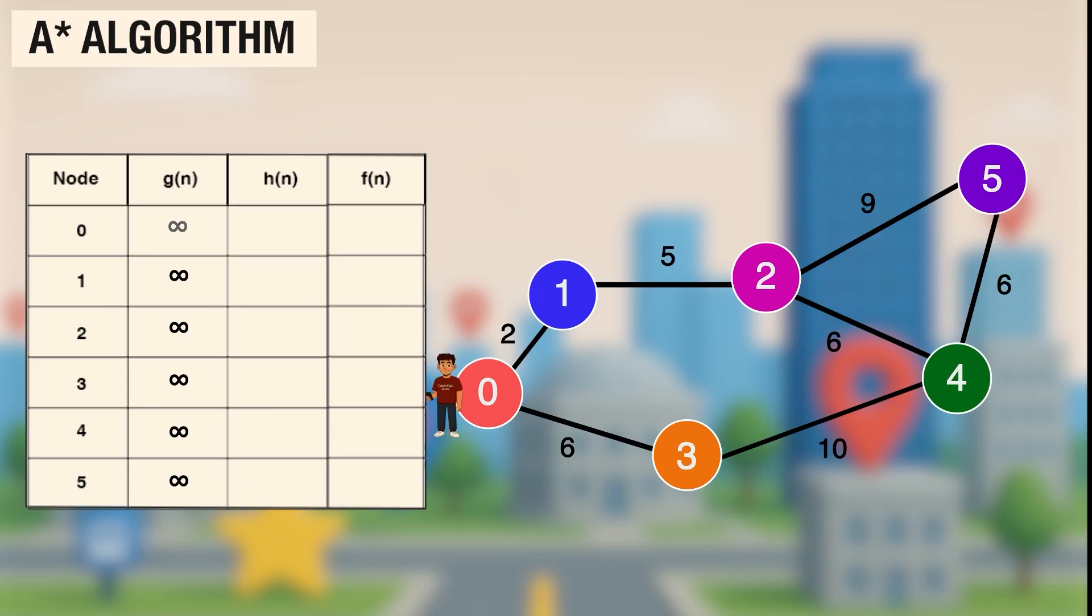We start at node 0. G is 0 here, H is 10, so F is 10. Everything else is still infinity because we haven't reached them yet. From node 0, going to node 1 makes G equals 2, H equals 8, so F equals 10. Going to node 3 makes G equals 6, H equals 7, so F equals 13. We pick the smallest F, that is node 1. From node 1, going to node 2 makes G equals 7, H equals 5, so F equals 12.